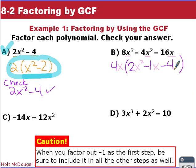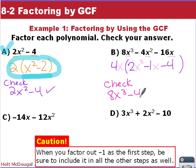We check: 4x times 2x² gives 8x³, 4x times negative x gives negative 4x², and 4x times negative 4 is negative 16x. Yes, we're back to the beginning. This may seem like we're just undoing what we did in our last unit.